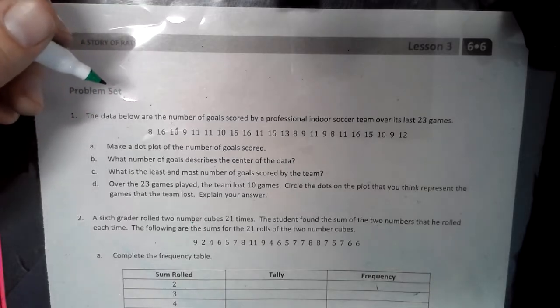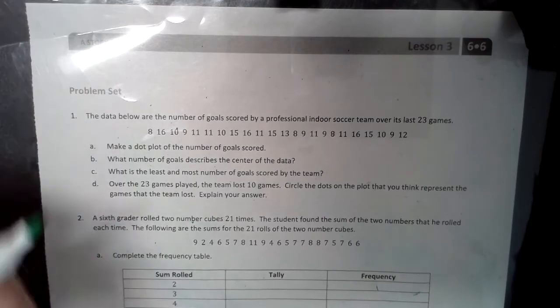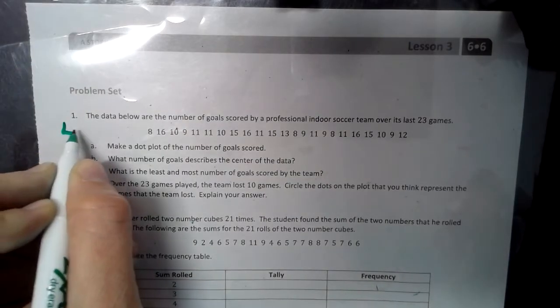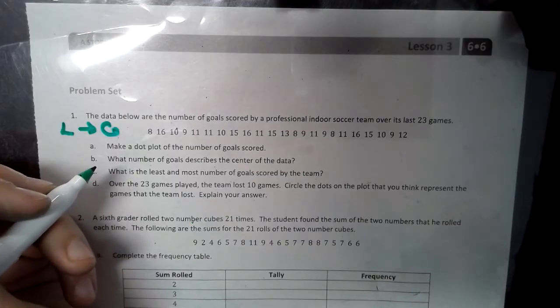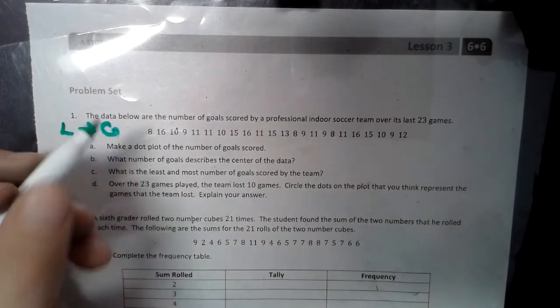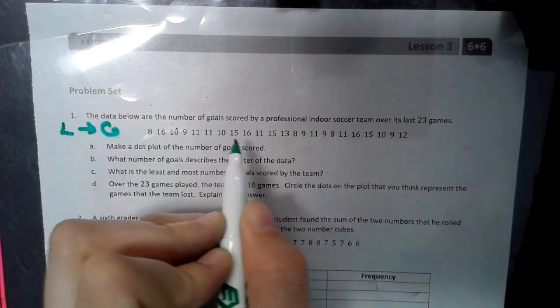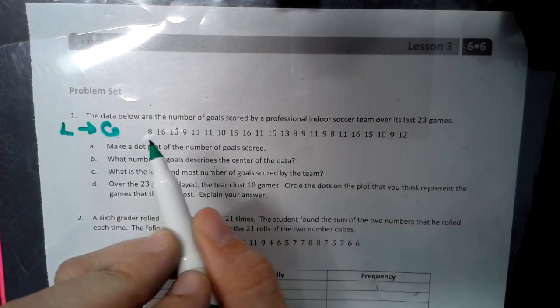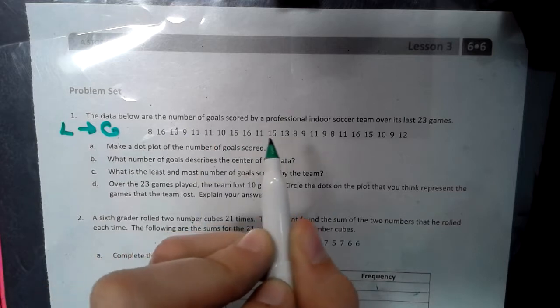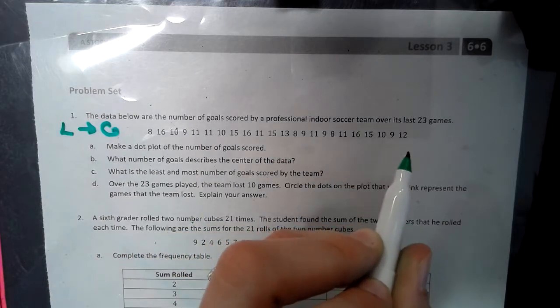First thing you need to remember about a dot plot is they need to be in numerical order. That means you can either be in order from least to greatest or greatest to least, either way. We look for our smallest number first, and if we look through that set of numbers, I see that there's an 8. And then when I look back through everything, the biggest number that I see is 16.